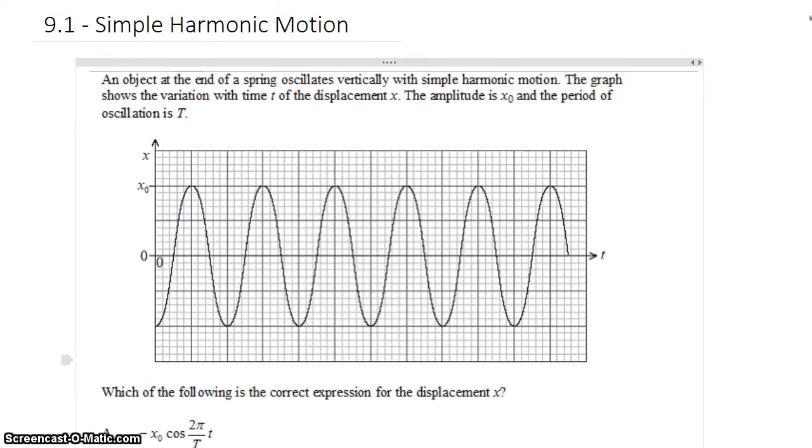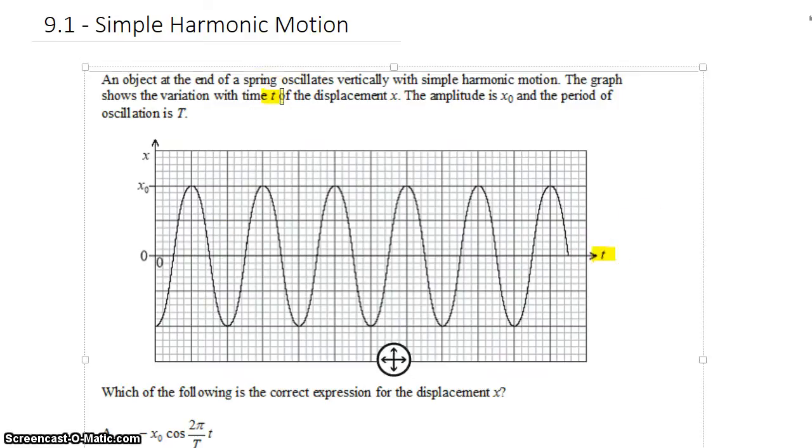We have an object at the end of a spring and it oscillates vertically with simple harmonic motion. The graph shows the variation with time t of the displacement x. The amplitude is x0 and the period of oscillation is capital T.